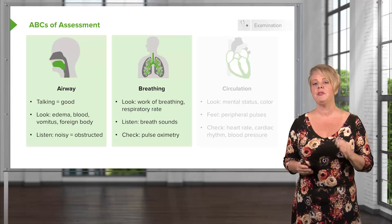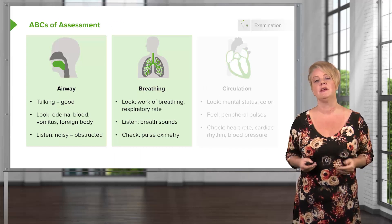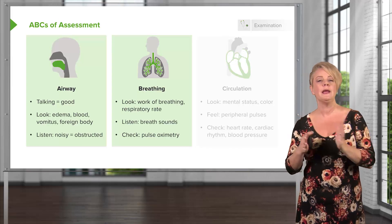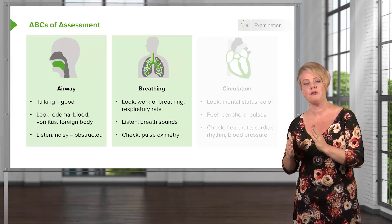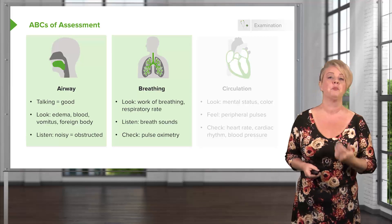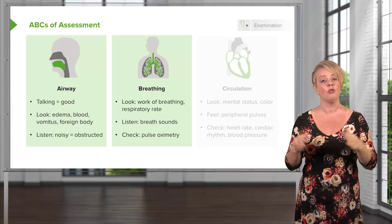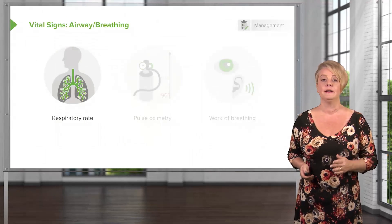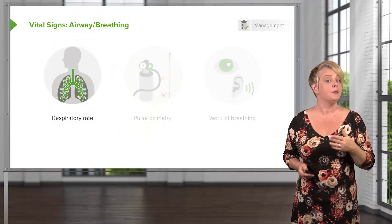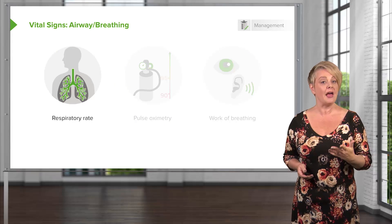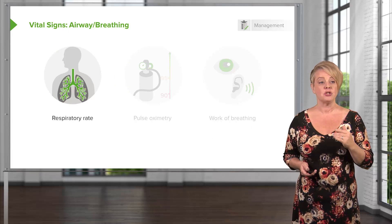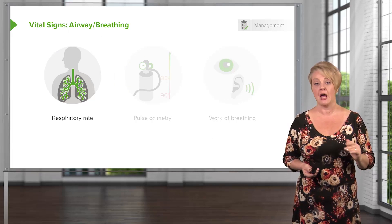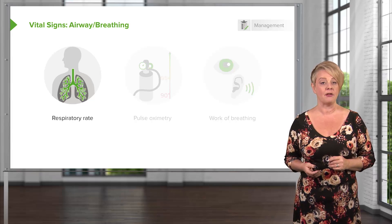A and B are usually assessed together, and the vast majority of A and B problems are really B problems — usually caused by pulmonary disease rather than primary airway emergencies, although we look at the two things together. Respiratory rate is an important vital sign for A and B. A patient who's breathing very quickly — you want to be concerned about the possibility that they're going to tire out and not be able to sustain that respiratory rate.